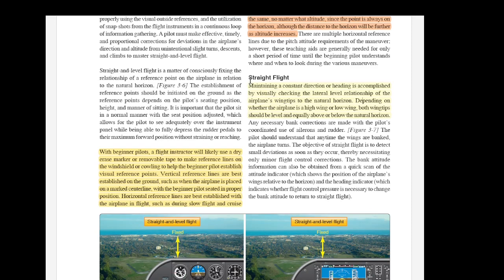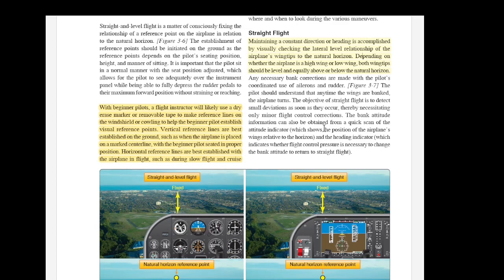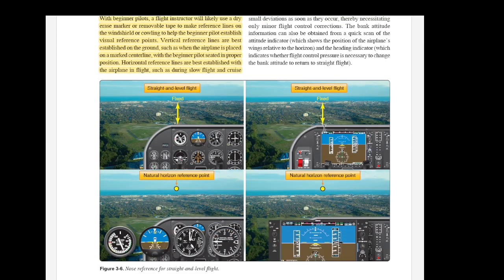And we'll just go on to mention this bit here. Straight flight. Maintaining a constant direction or heading is accomplished by visually checking the lateral level relationship of the airplane's wingtips to the natural horizon. Depending on whether the airplane is a high wing or low wing, both wingtips should be level and equally above or below the natural horizon.